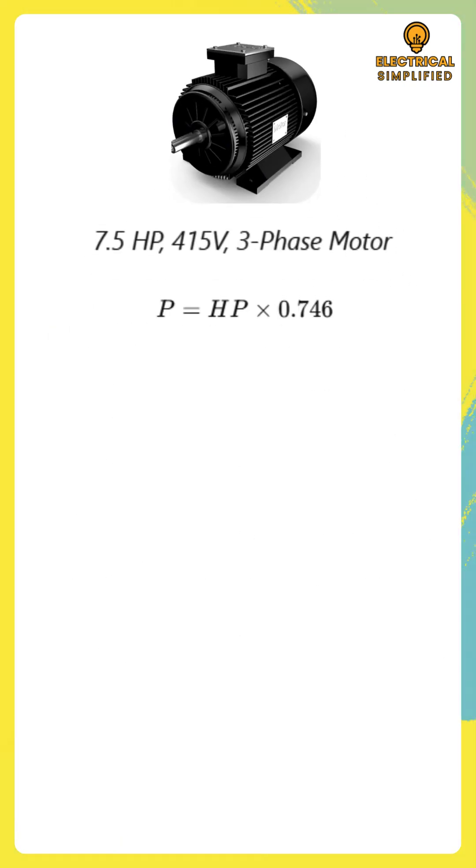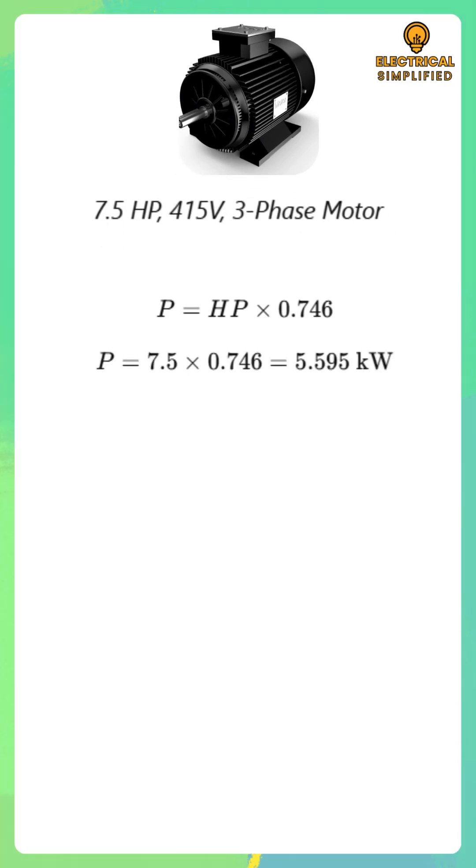Power equals horsepower multiplied by 0.746. Substituting horsepower equal to 7.5, power equals 7.5 multiplied by 0.746, which is equal to 5.595 kilowatts.